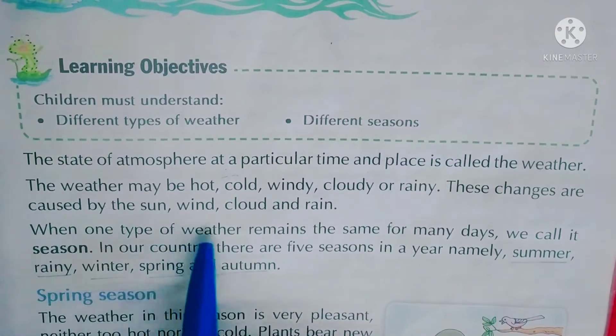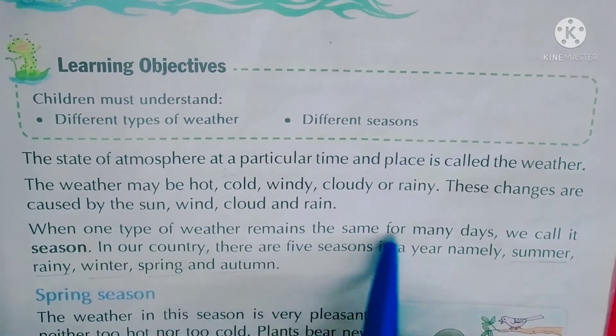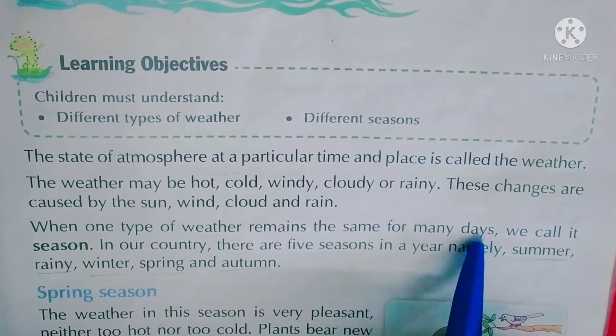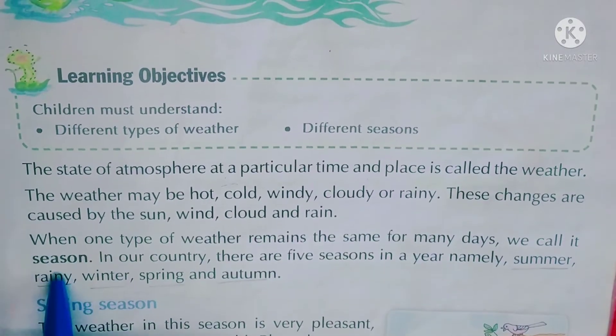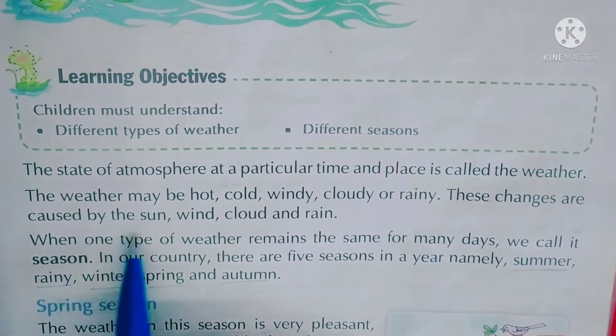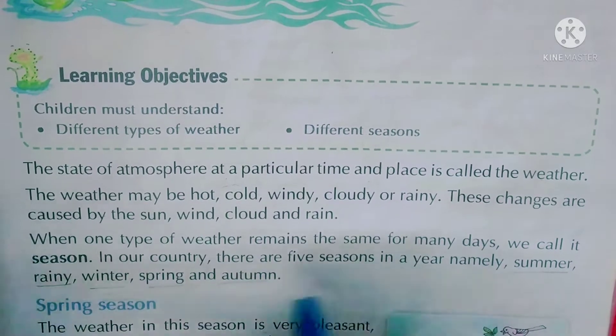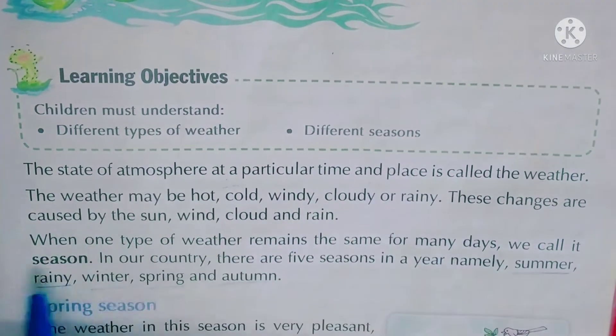When one type of weather remains the same for many days, we call it a season. जब एक ही तरीके का मौसम कई दिनों तक रहे, तो हम उसको रितू कहते हैं। एक ही तरीका मौसम, कई समय तक एक जैसा रहे, we call it season - रितू।